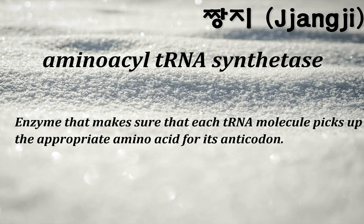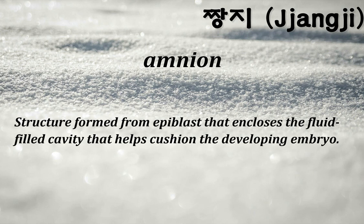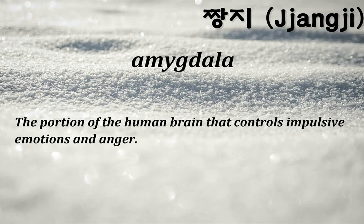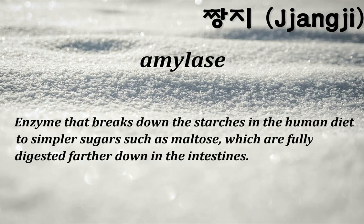Aminoacyl tRNA synthetase: enzyme that ensures each tRNA molecule picks up the appropriate amino acid for its anticodon. Amnion: structure formed from epiblast that encloses the fluid-filled cavity cushioning the developing embryo. Amygdala: the portion of the human brain that controls impulsive emotions and anger. Amylase: enzyme that breaks down starches in the human diet to simpler sugars such as maltose, which are fully digested farther down in the intestines.